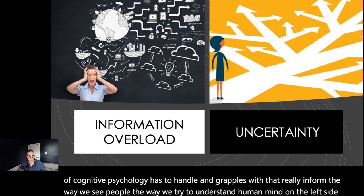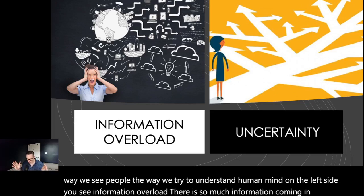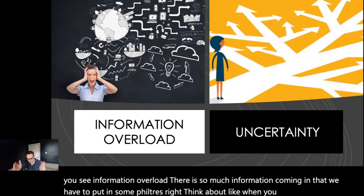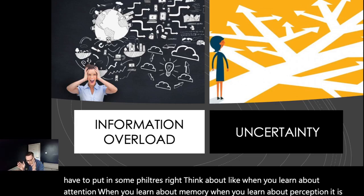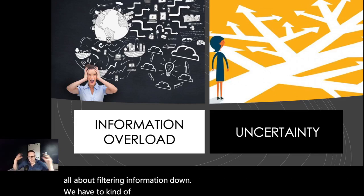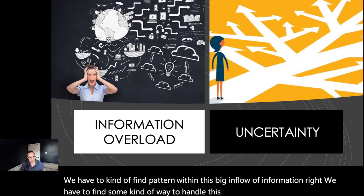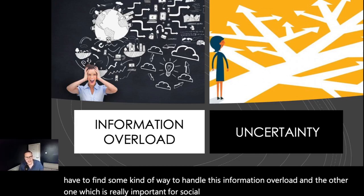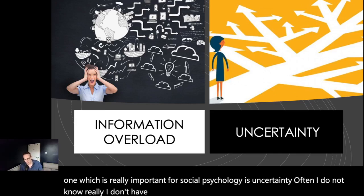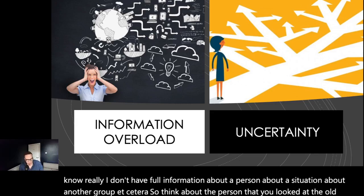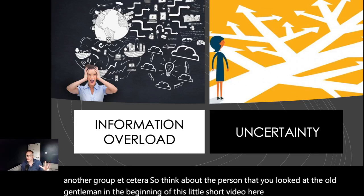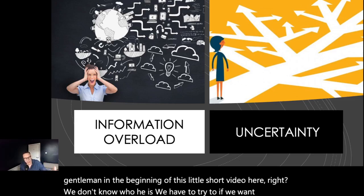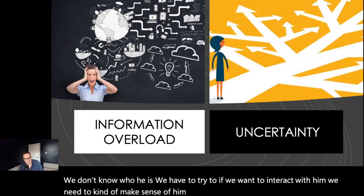Social cognition has two main problems to handle. On the left side is information overload — there is so much information coming in that we have to apply filters. Think about attention, memory, and perception: it's all about filtering information down and finding patterns within this big inflow. The other important one for social psychology is uncertainty. We often don't have full information about a person, a situation, or another group. Think about the old gentleman at the beginning — we don't know who he is, but if we want to interact with him we need to make sense of him and reduce that uncertainty.